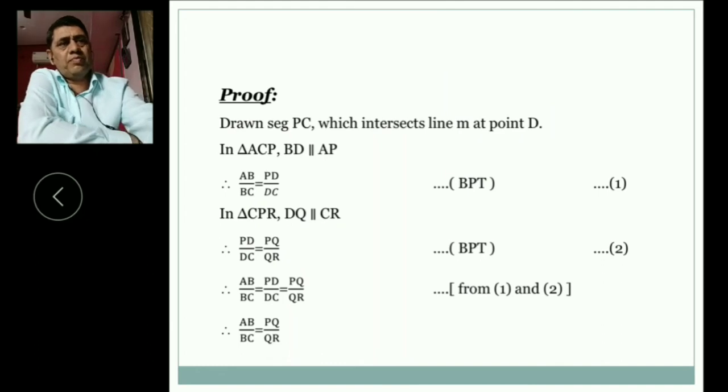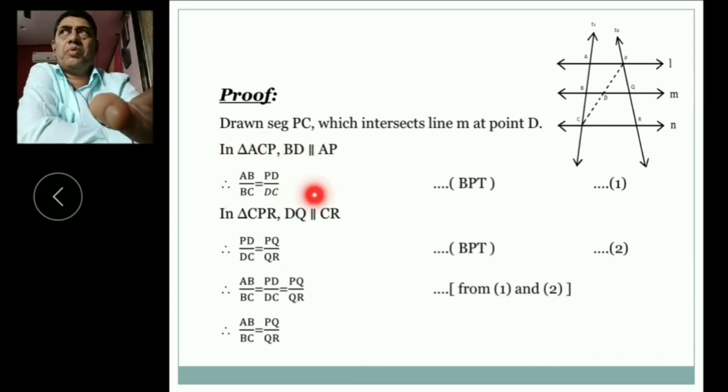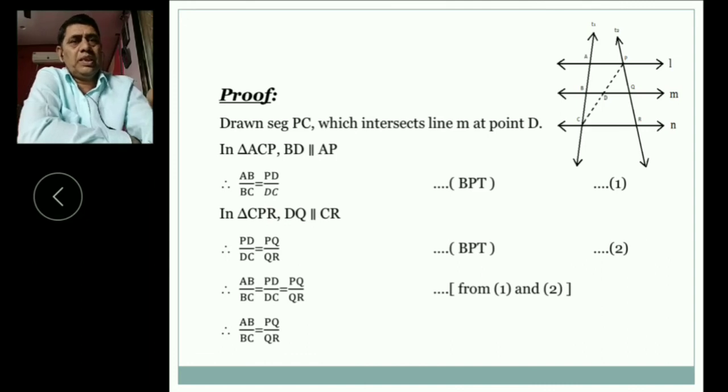We write given and to prove. Now next proof. Drawn segment PC which intersects line M at point D. In triangle ACP, BD parallel to AP. By BPT, AB upon BC is equal to PD upon DC. Now in triangle CPR, DQ is parallel CR. Again by using BPT, PD upon DC is equal to PQ upon QR.